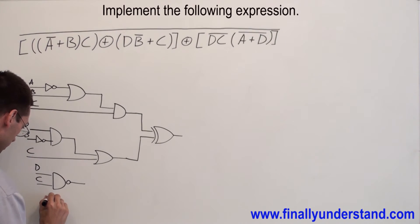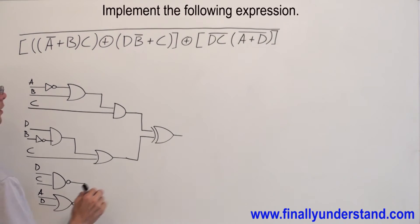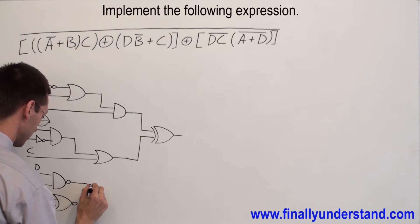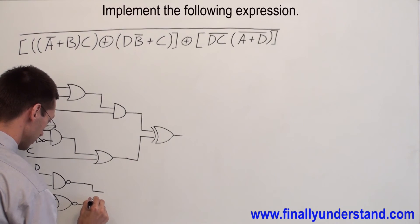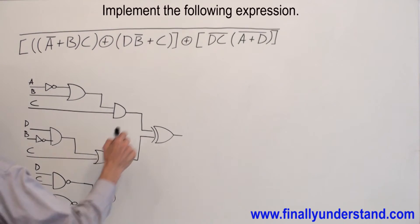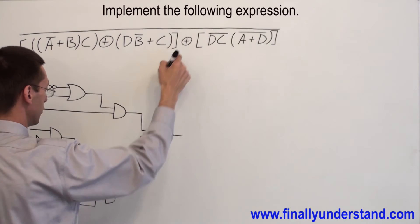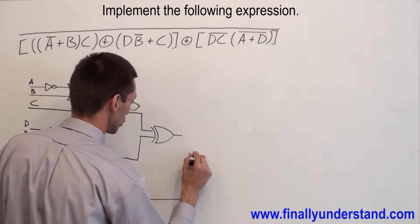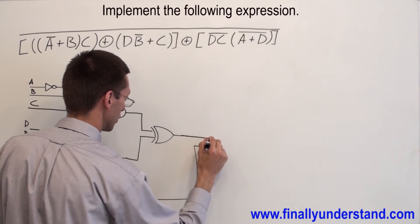My NOR gate has two inputs: A and D ANDed with the NAND gate. And as we said before, the very last gate in the circuit is going to be exclusive NOR.